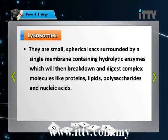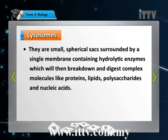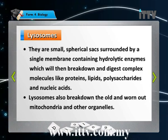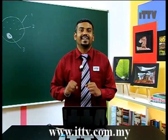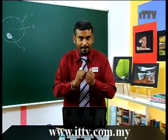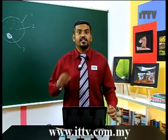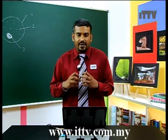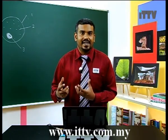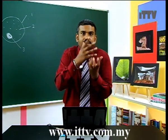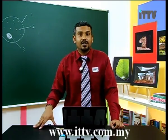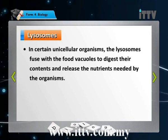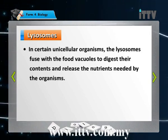Lysosomes are small spherical sacs surrounded by a single membrane containing hydrolytic enzymes, which break down and digest complex molecules of food into simpler forms. Lysosomes also break down old and worn-out mitochondria and organelles. There is something known as autolysis: when a cell or its organelles reach the end of their life cycle, the lysosome ruptures, allowing its enzymes to spill into the cytoplasm and digest everything — this is the way a cell commits suicide. In unicellular organisms like amoeba and paramecium, lysosomes fuse with food vacuoles to digest their contents.